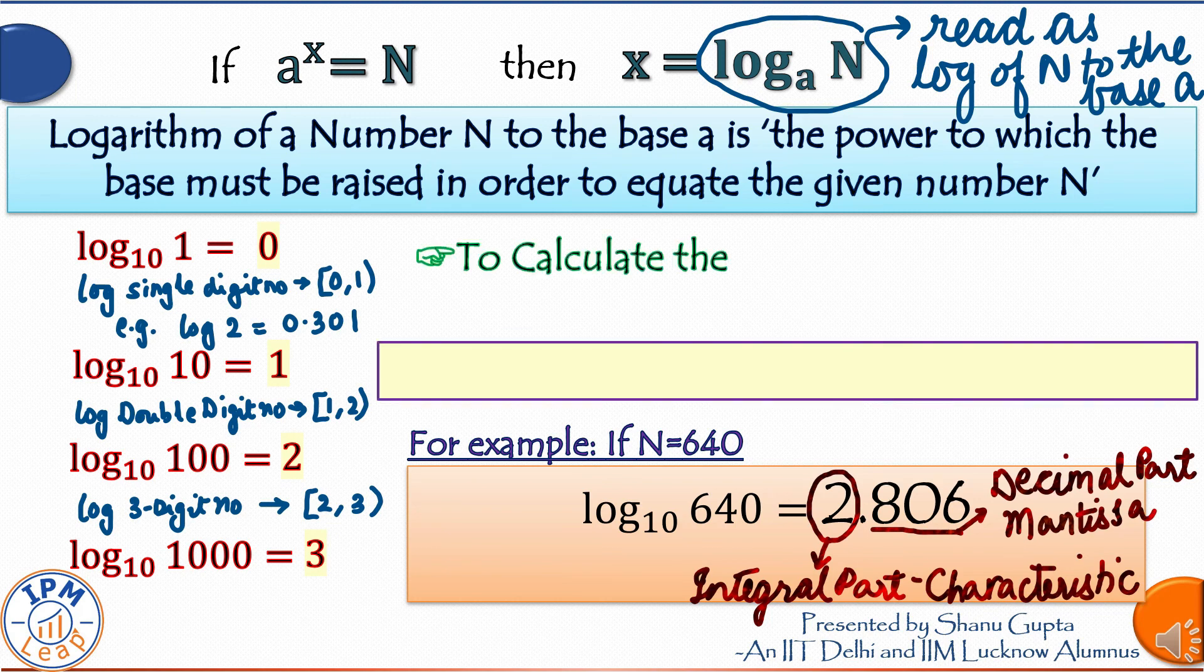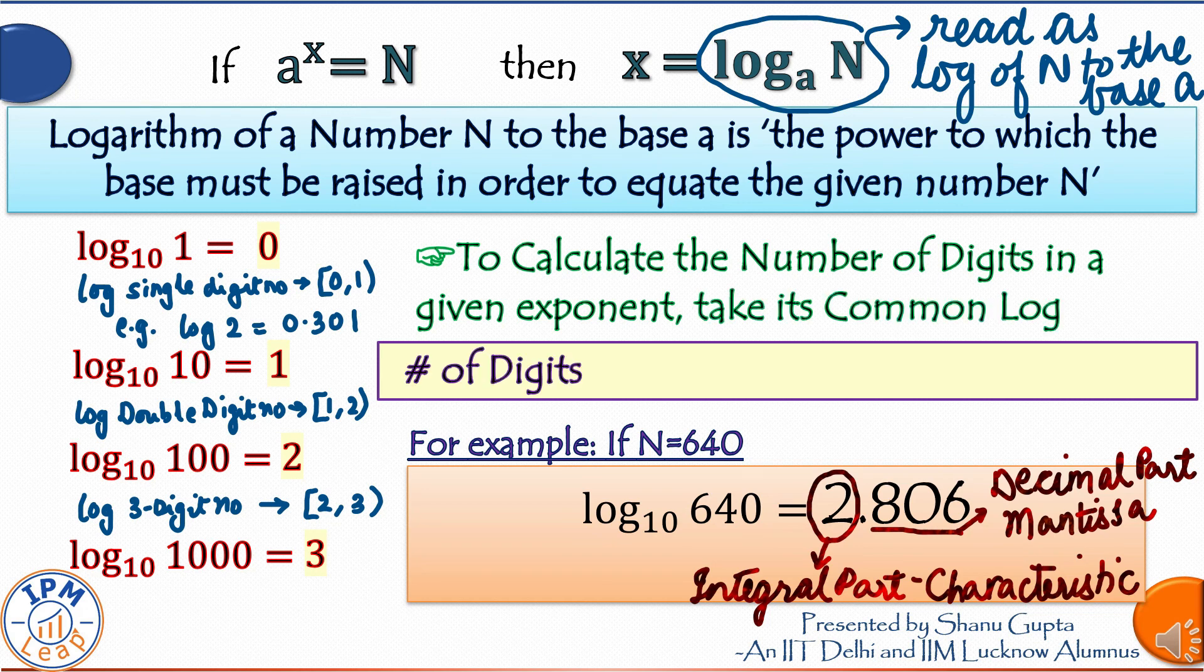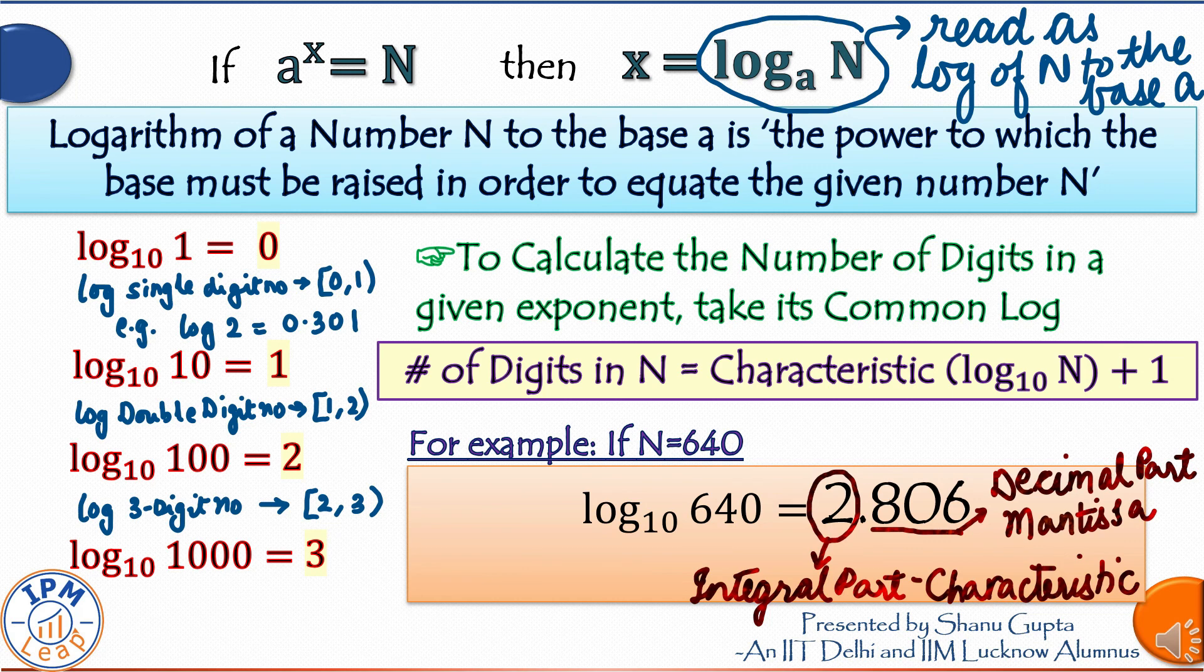Three digit number, its log is 2 point something. Single digit number, its log is 0 point something. So quickly tell me the relation between number of digits and its log.